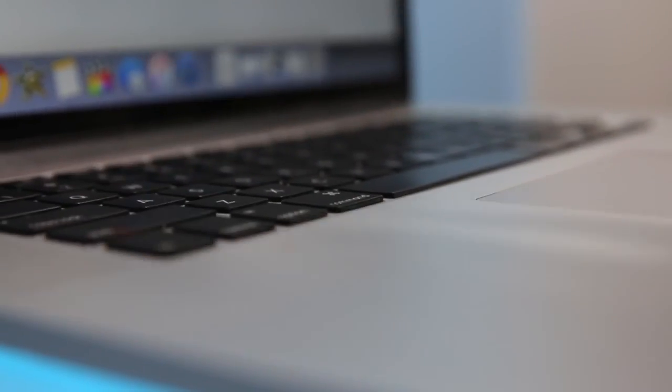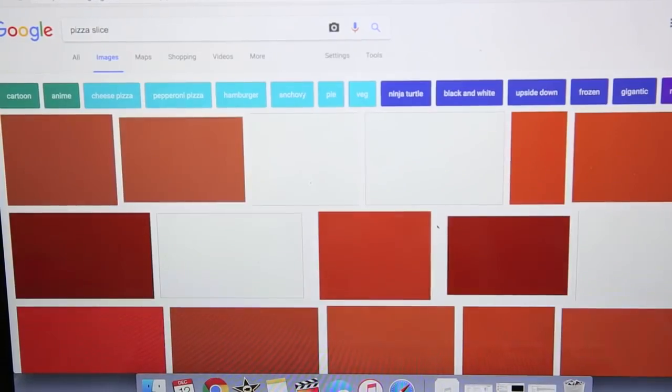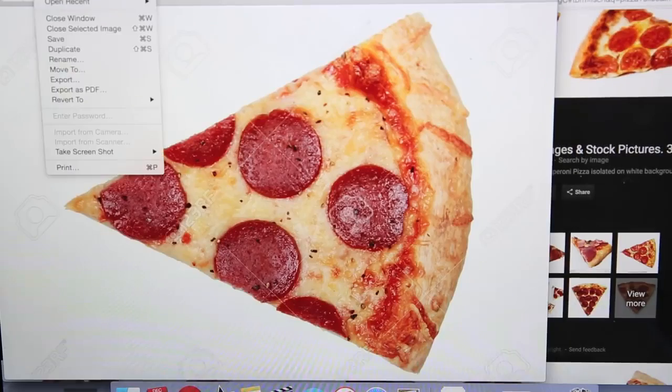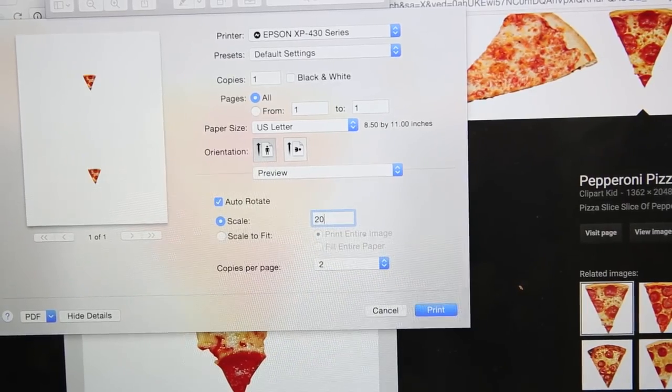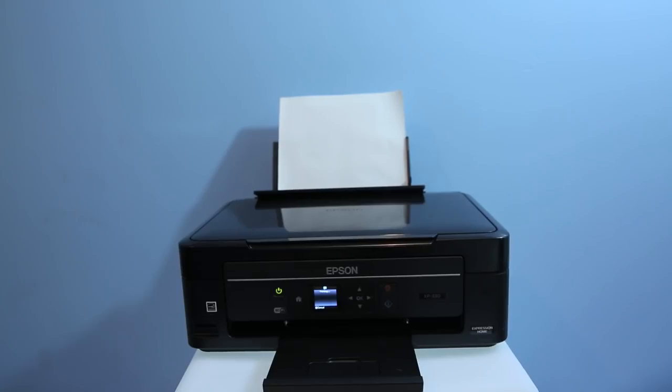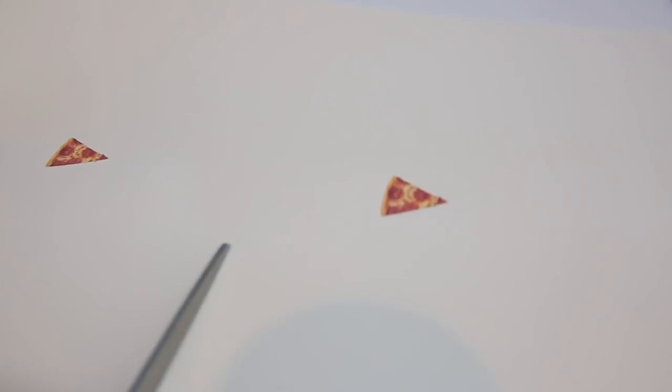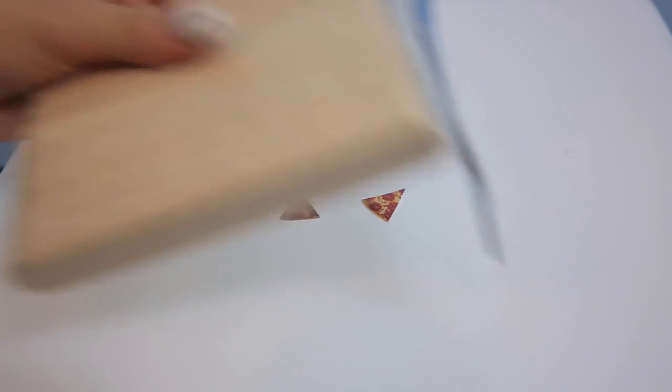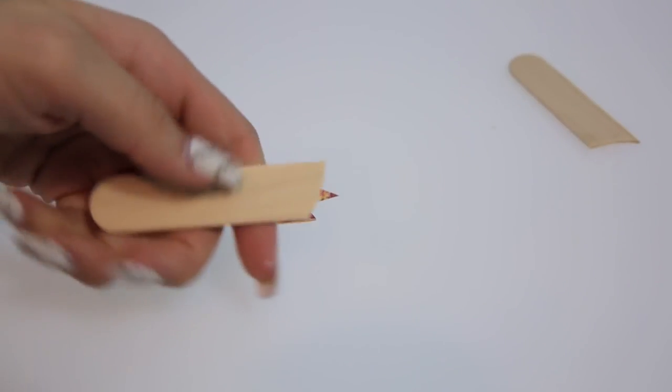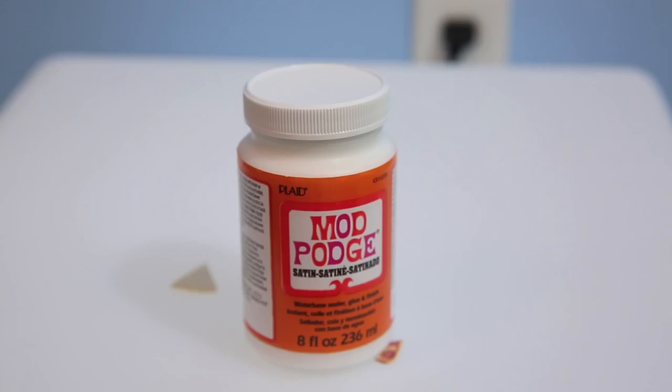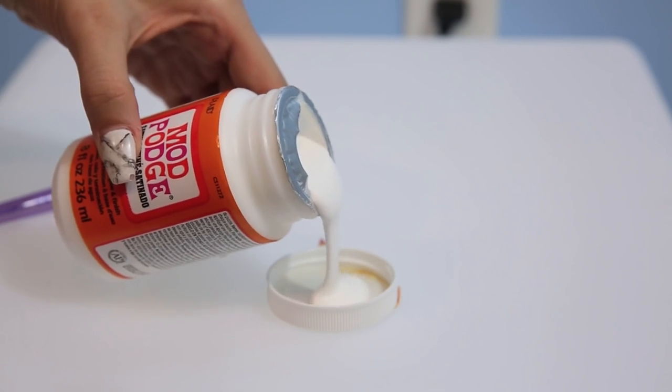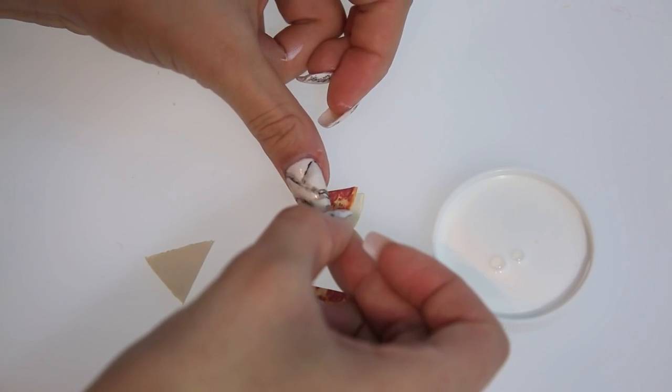Now to make the pizza headphones, print out two small pieces of pizza. Cut out the pizza and take popsicle sticks. Cut a triangle out of the popsicle stick.